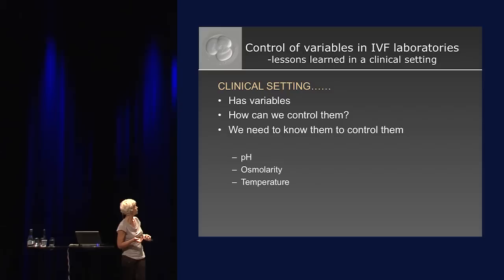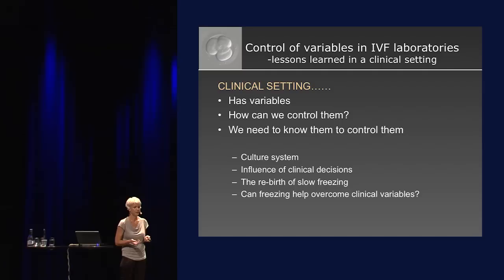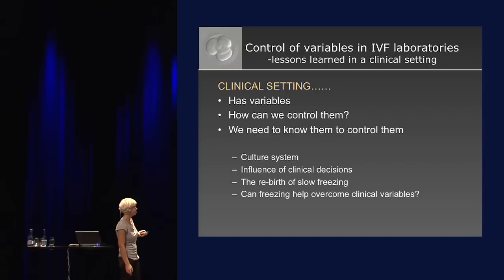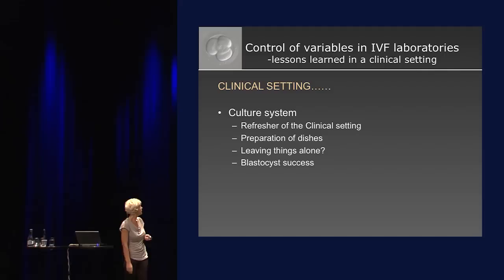Let's agree that the clinical setting has variables, but we need to know how we can control them — and we need to know what they are first. Last year I talked about pH and temperature. Today I'm going to talk about culture systems, the influence of clinical decisions, our doctors — God bless them — and touch a little on the rebirth of slow freezing to see if freezing can help us overcome some clinical variables.